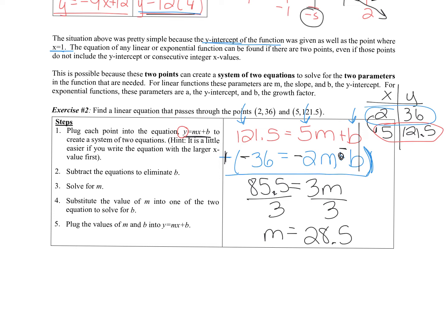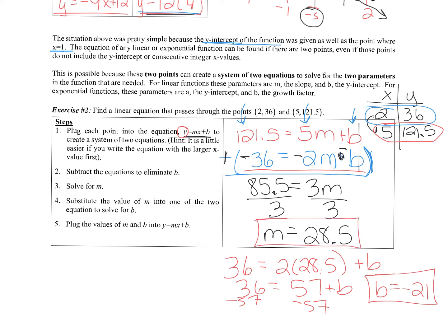So from here just like in any other system we plug in the value we have to find the other value. I'm going to use the second equation just because that one looks a little easier so here I have 36 equals 2 times 28.5 plus b, 36 equals 57 plus b, and then when I subtract 57 from both sides I get that b equals negative 21. So these are my parameters, my slope and my y-intercept, and I can plug them in now to get my final equation. So the equation of the linear function that passes through these two points is 28.5x minus 21.